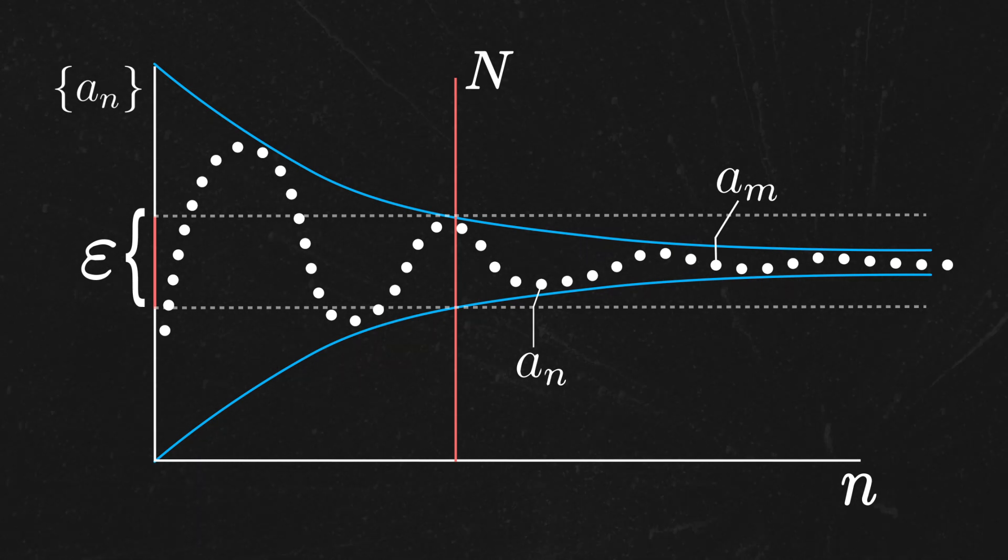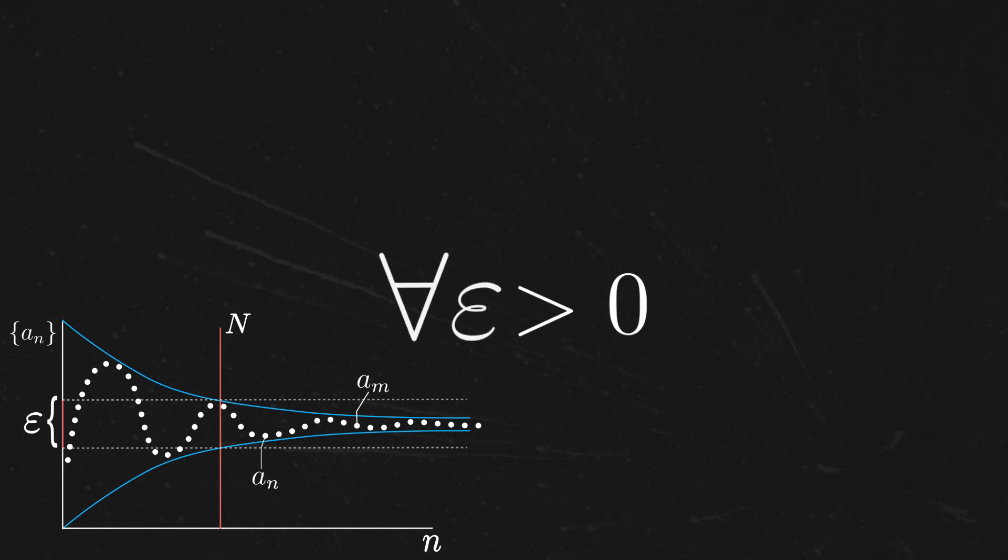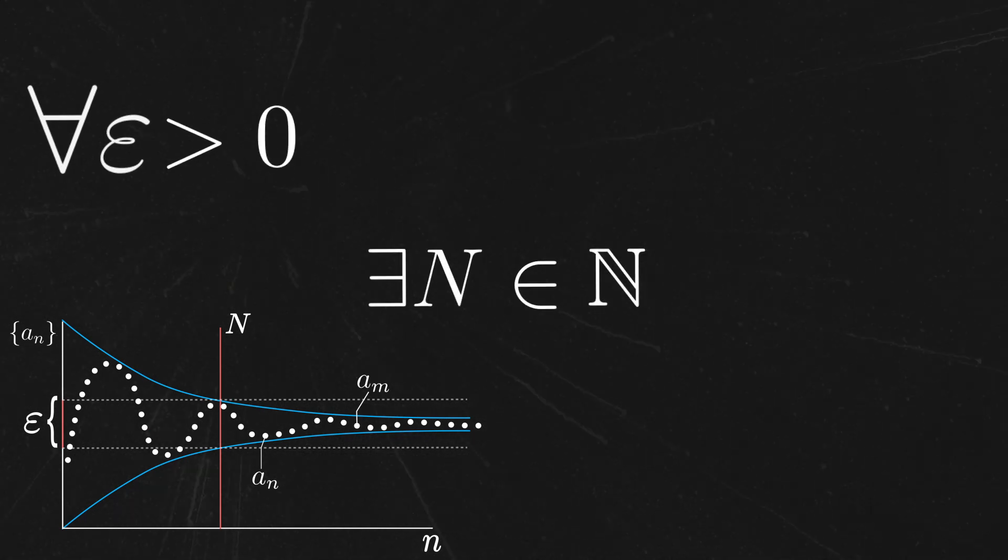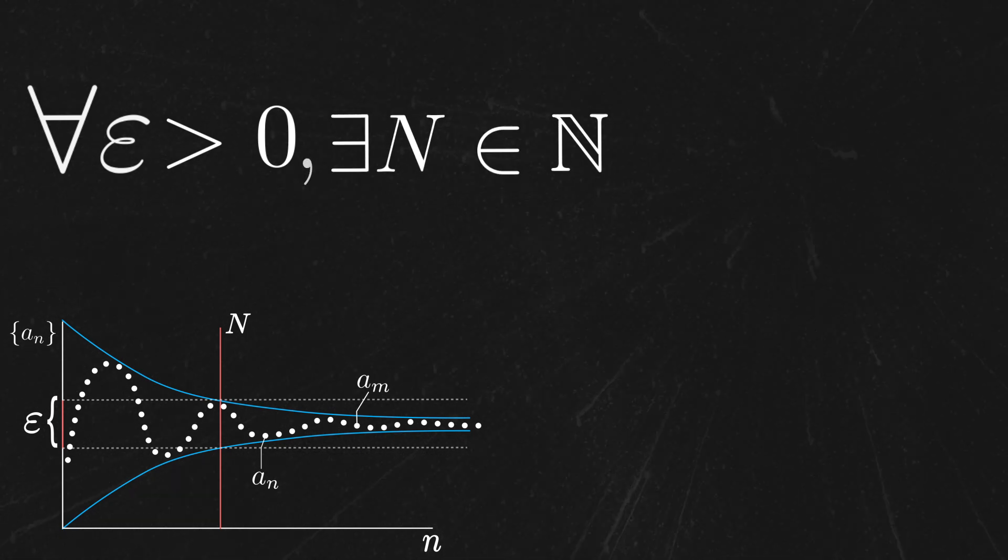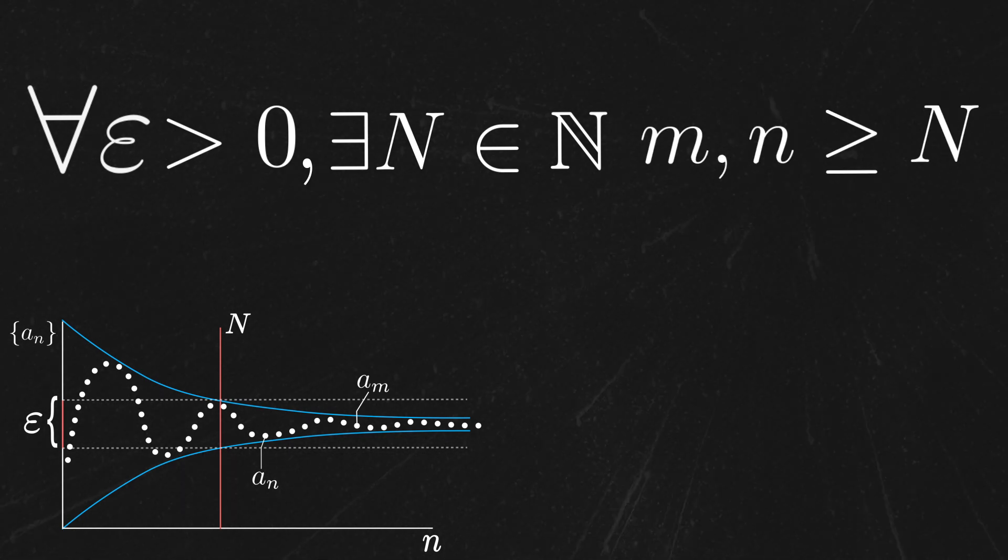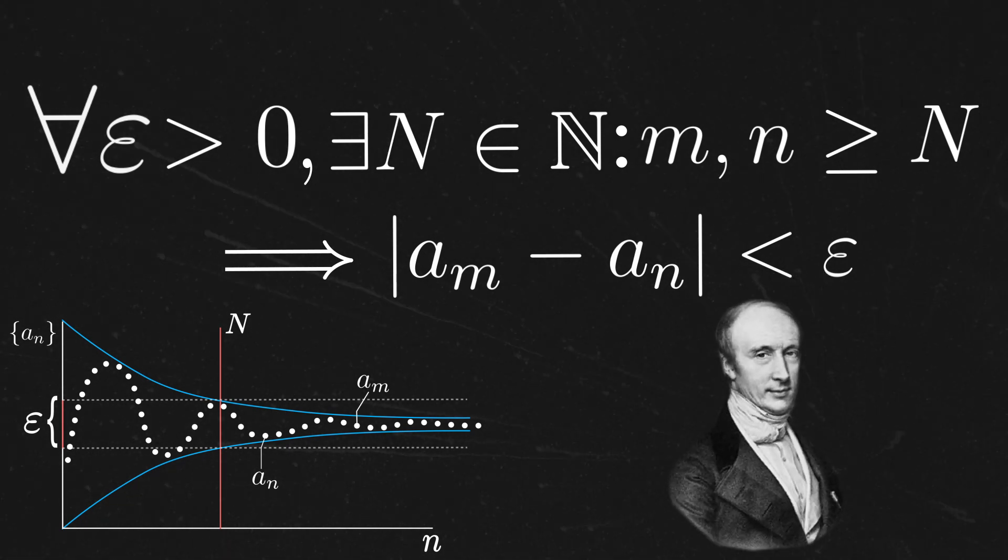To express this more formally with mathematical symbols, we'll say that we're interested in sequences such that for all epsilon bigger than zero, which are rational numbers representing our distances, there exists some big N, a natural number, so that whenever m and n are bigger than big N or equal to, it forces the distance between those terms to be less than epsilon. This is the formal definition of what's known as a Cauchy sequence.